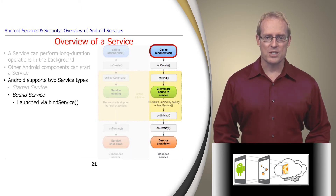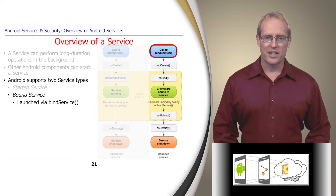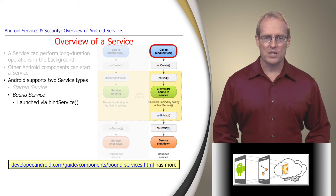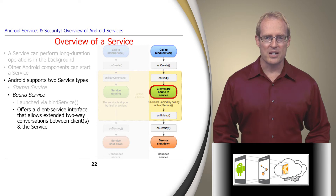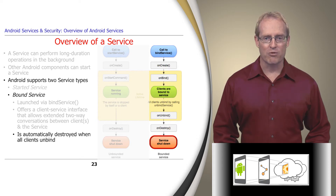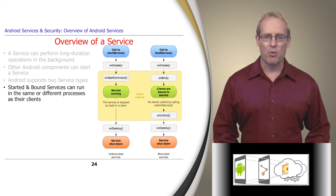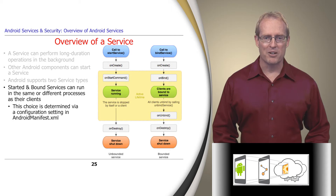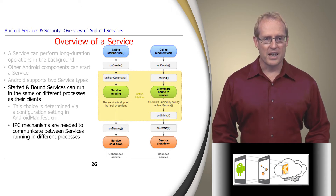A bound service is launched when a client, typically an activity component, calls bindService. A bound service offers a client-service interface that allows extended two-way conversations between one or more clients and the service. A bound service runs only as long as at least one client remains bound to it, and is automatically destroyed when all clients unbind. Both started and bound services can run in the same or different processes as their clients, based on a configuration setting in the Android manifest XML file. If they run in different processes, then some form of inter-process communication mechanism is needed to exchange messages.